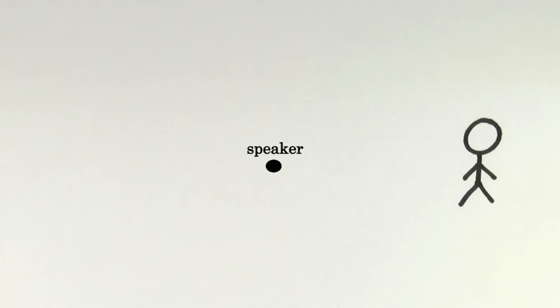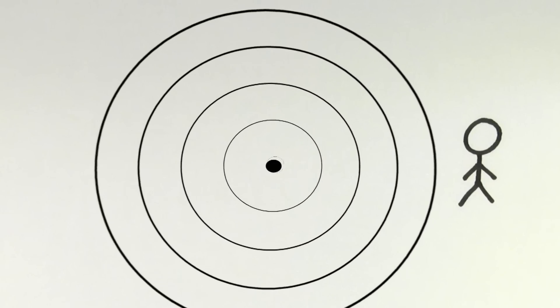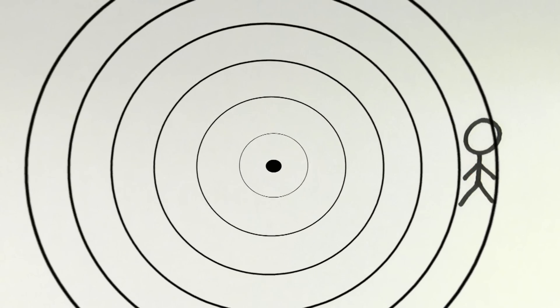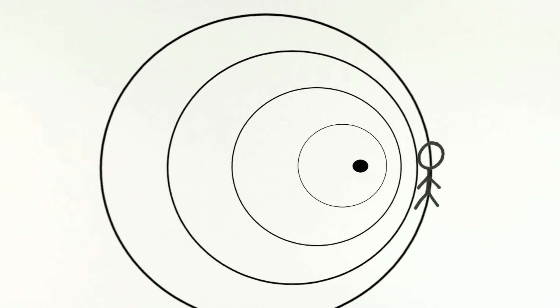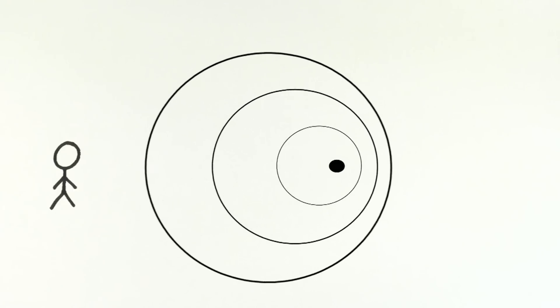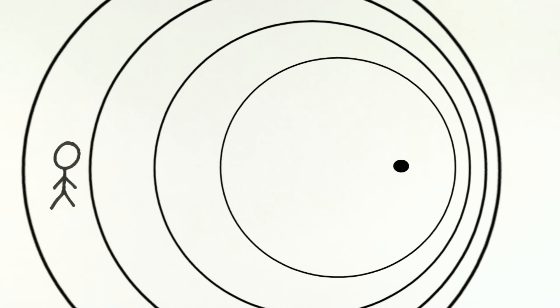The frequency that you'll observe when standing next to a speaker is determined by the rate at which wave crests strike your location. If the speaker moves toward you, you'll hear a higher frequency. And if the speaker moves away from you, you'll hear a lower frequency.